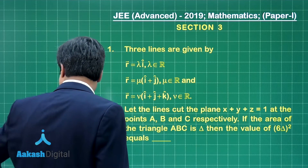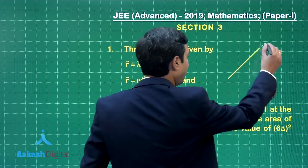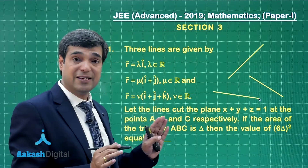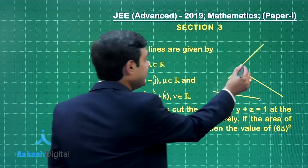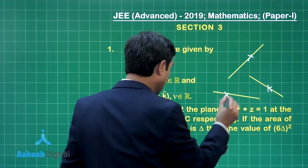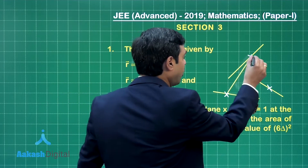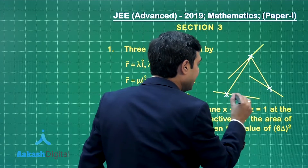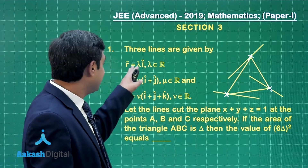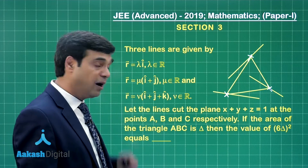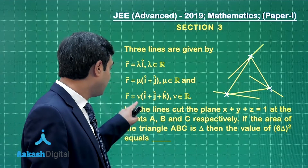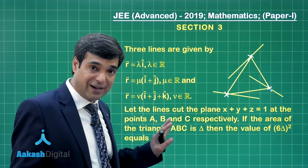There are three lines given in this question. A plane is cutting these three lines at three points A, B, and C. A point on the first line is λ, a point on the second line is (μ, μ), and a point on the third line is (ν, ν, ν).